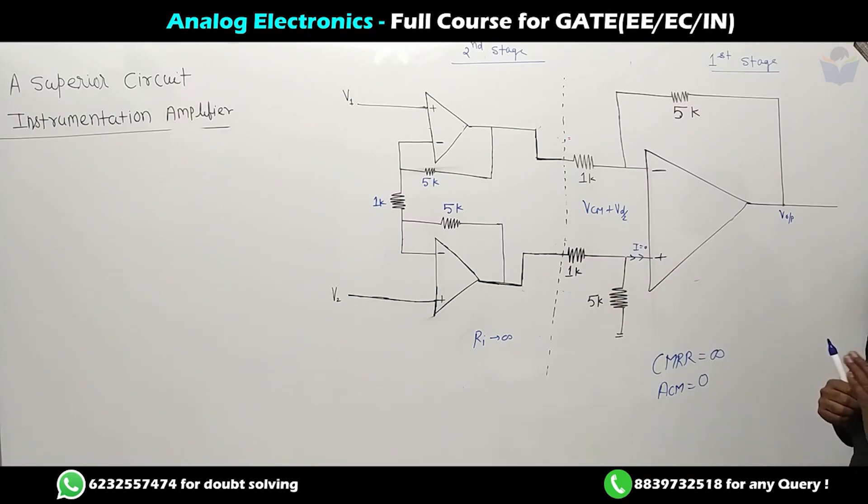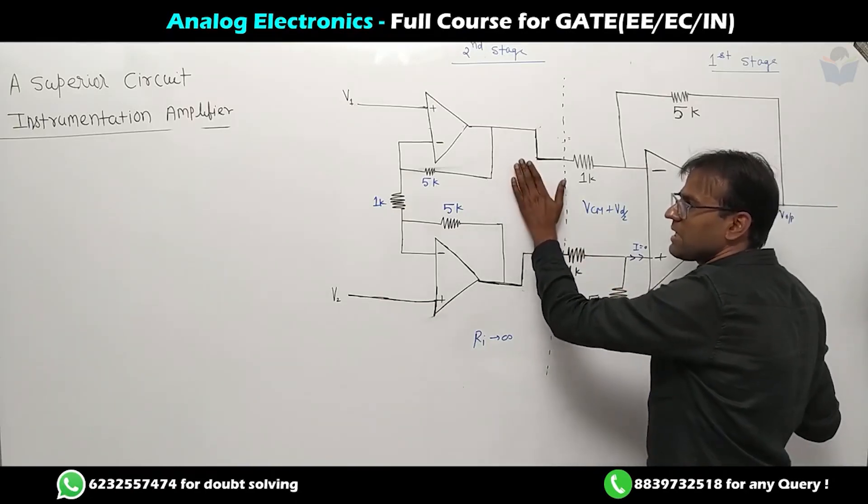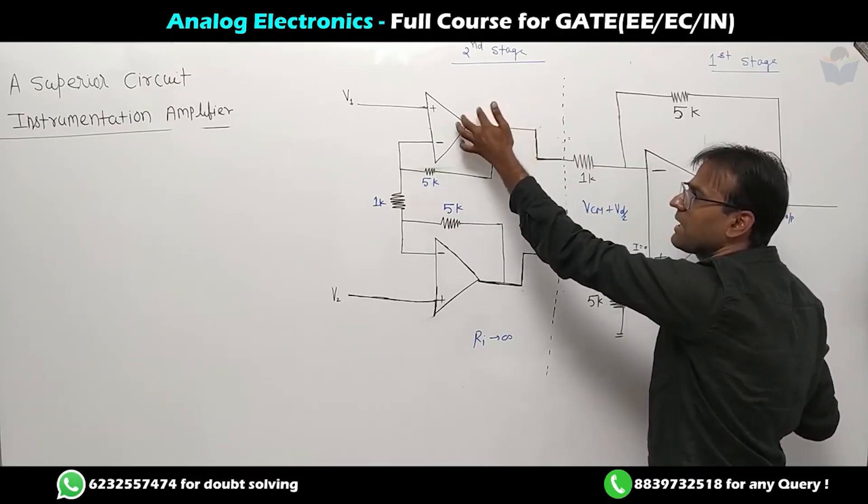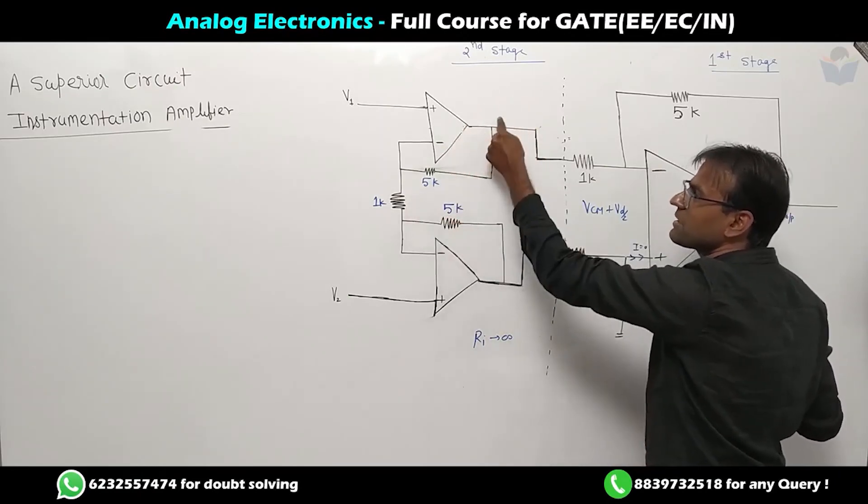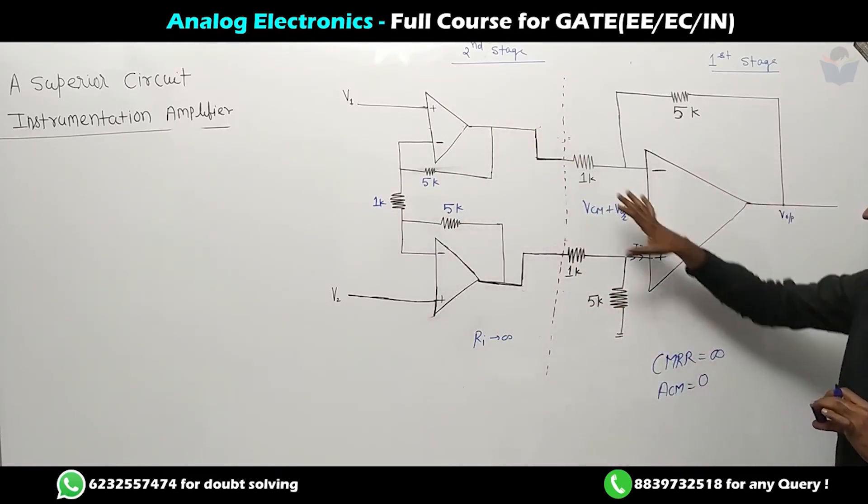But the problem with the previous circuit was that whatever common mode voltage was going - initially VCM was coming, but when the amplifier was added it became six times VCM which is not acceptable. It's possible that this six times VCM in the first stage amplifier could cause problems.